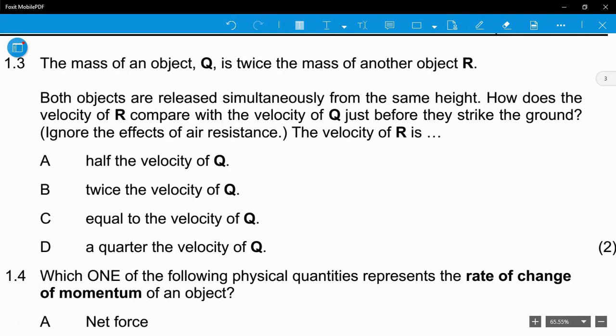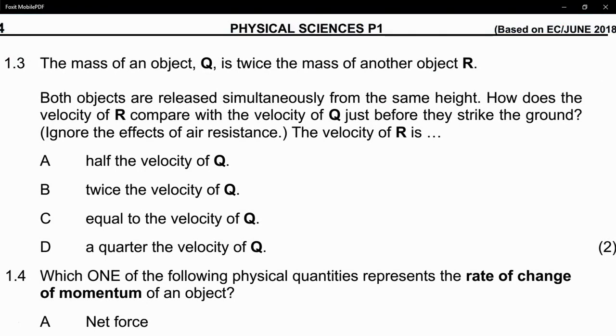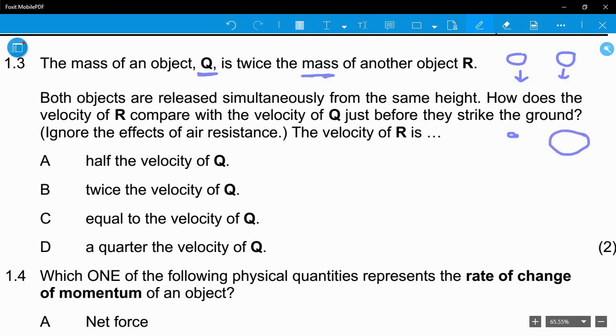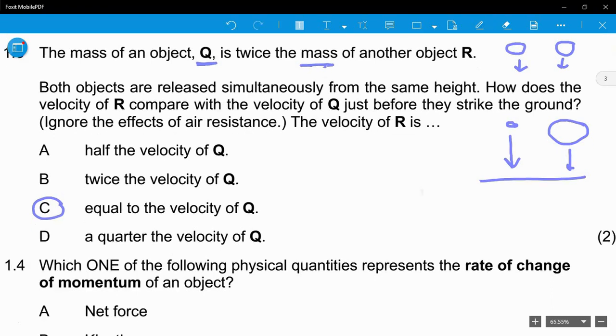Question 1.3: The mass of object Q is twice the mass of another object R. Both objects are released simultaneously from the same height. How does the velocity of R compare to the velocity of Q before they strike the ground? Ignore air resistance. You might be tempted to use F equals Ma in this question, but that's not what we're looking at. We're looking at equations of motion. If you look at the equations of motion, mass doesn't play a role. Mass is not important. You've seen where two objects of different masses fall down - a small rock and a big boulder. In the absence of air resistance, they'll reach the ground at the same time. Therefore, R has equal velocity to Q. The answer is A.